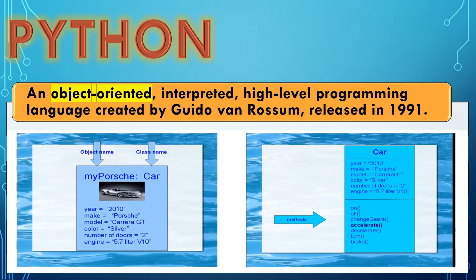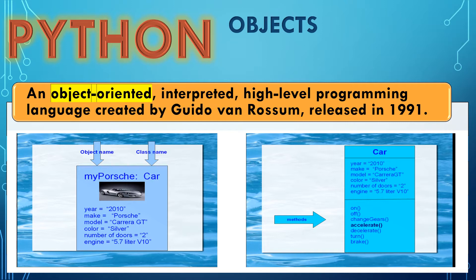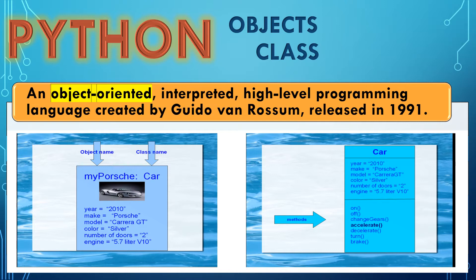Python is an object-oriented program because it uses objects, and every Python program is defined as a class. A class defines the characteristics of an object. We will discuss further about the class in our next video tutorials — for now, just remember a class is a blueprint for the object.